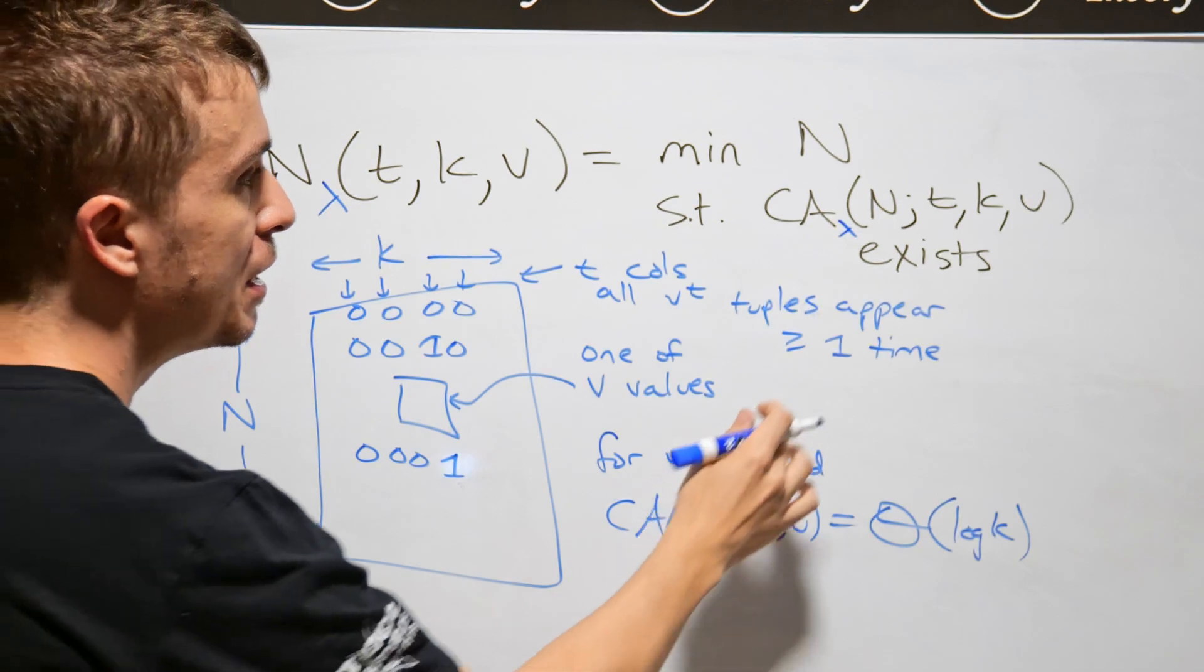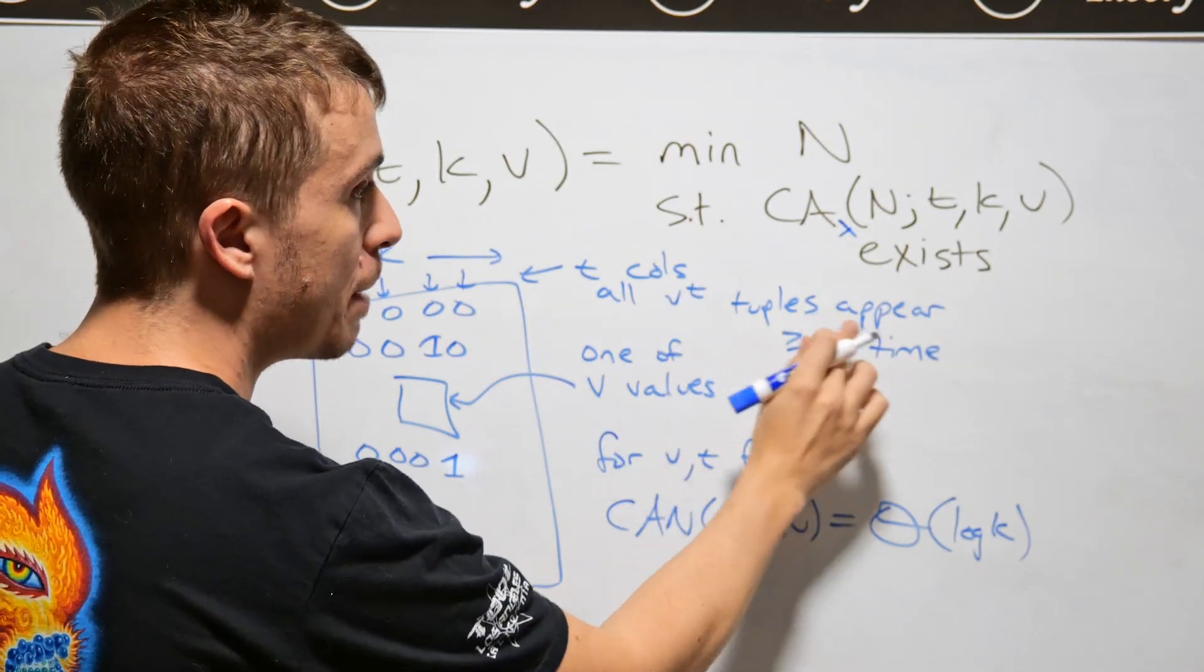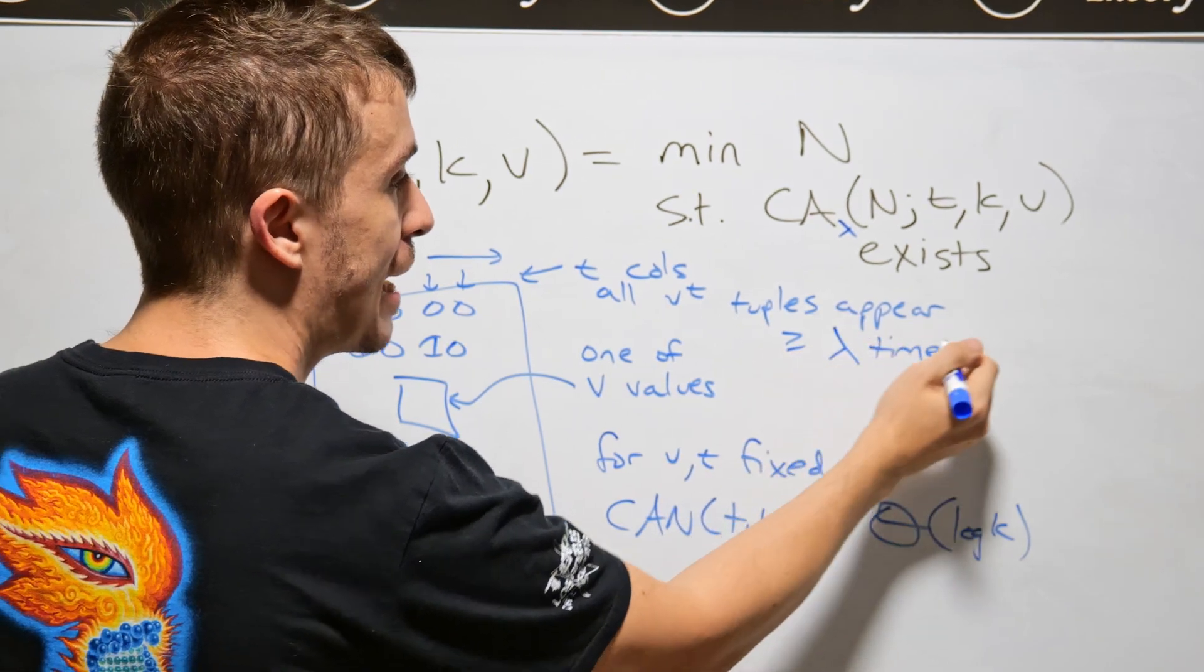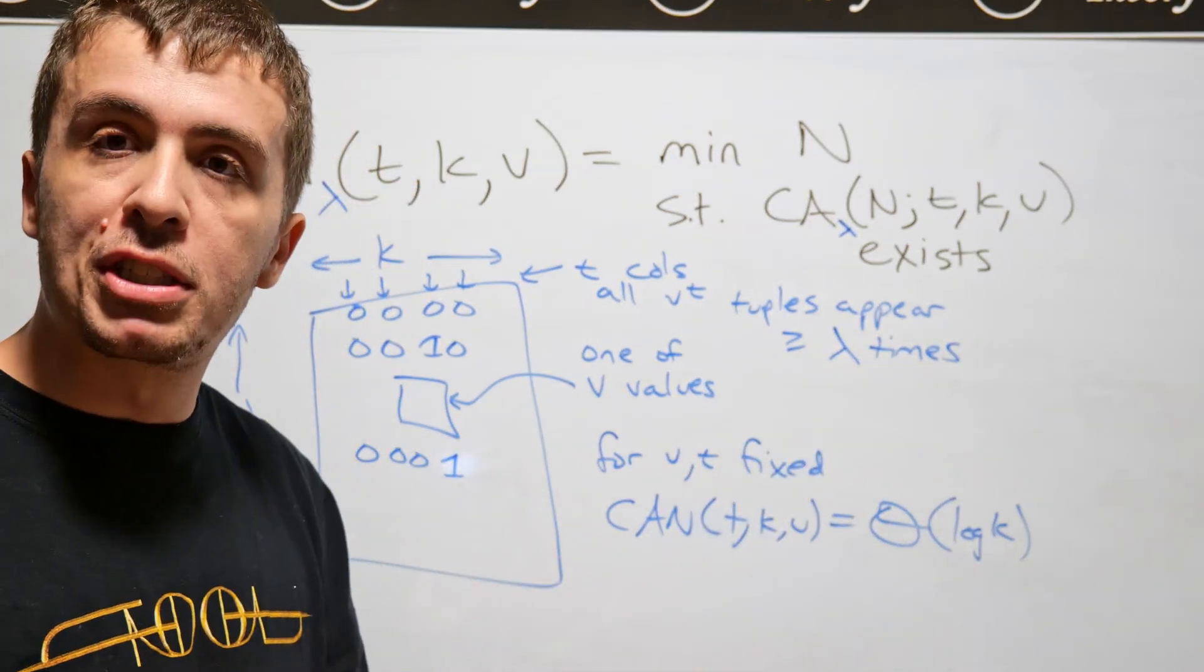And what this lambda is, is instead of having every t tuple appear at least once, I'm going to have it appear at least lambda times. And why would you want such a thing?